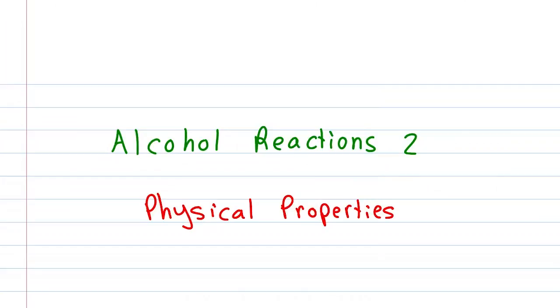Leah here from Leah4Sci.com and in this video, we're going to look at the physical properties of alcohol from hydrogen bonding to solubility and boiling points. In the last video, we introduced the alcohol functional group as an OH with a polar covalent bond having a partial negative on oxygen and partial positive hydrogen. You can find it along with the entire alcohol video series, practice quiz and cheat sheet by visiting my website, Leah4Sci.com/alcohol.